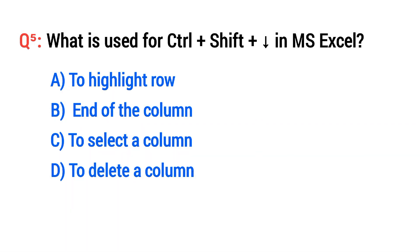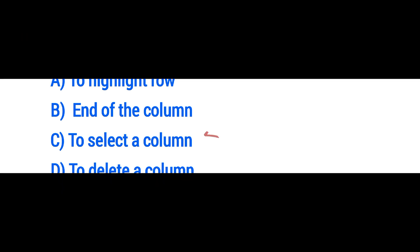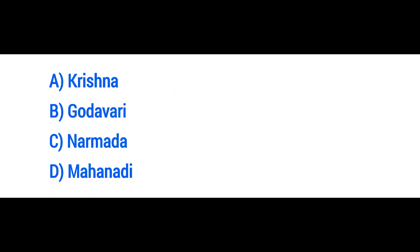Question number five: What is used by the keyboard shortcut Ctrl+Shift+NMS in Excel? The right option is C: To select a column.